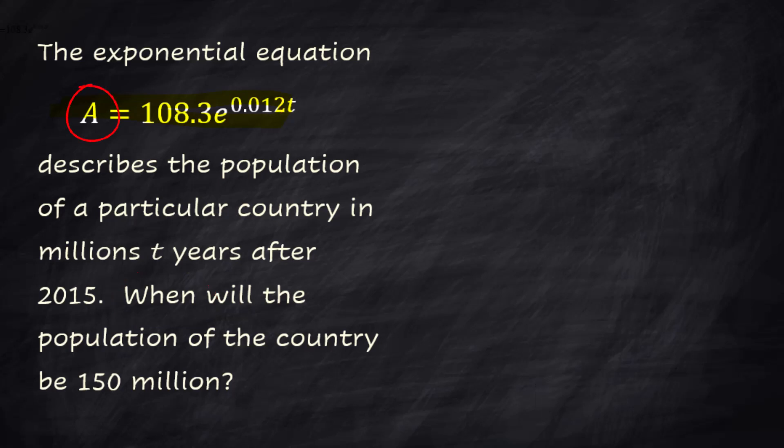A, that's gonna be the answer. So we want to know how long is it gonna take to get to 150 million and the formula is 108.3 e to the 0.012t. I'm gonna make that t a different color so it sticks out a bit. We are solving for t.